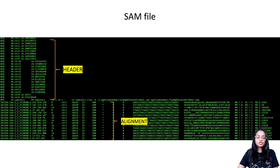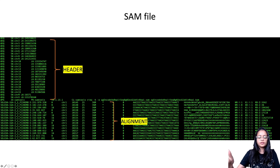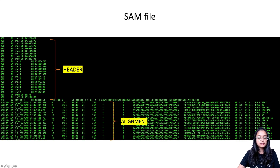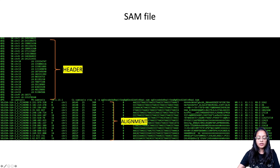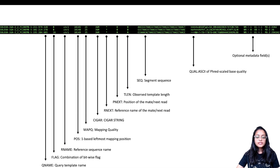This is essentially how a SAM file looks. To give a brief recap: the upper section is the header section and the lower section is the alignment section. The header section starts with the '@' symbol, and in the alignment section each row corresponds to one read, storing information about the alignment of that read. I'll link the previous video in the description below.